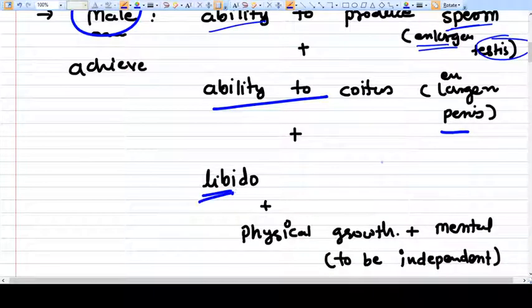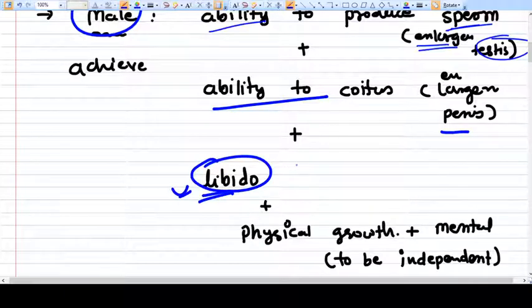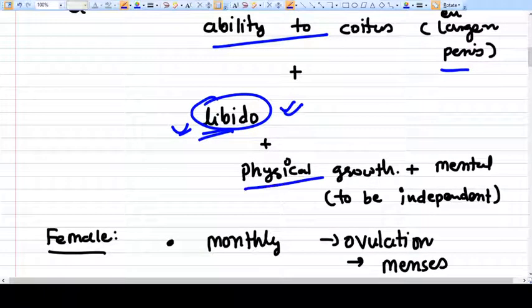Libido develops - the thinking changes and the person now thinks sexually. The person wants to be involved in sexual activity. There will be physical growth and mental growth.